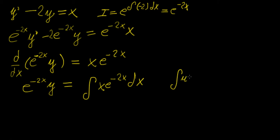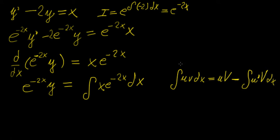Integration by parts: given a product of two functions u and v, you integrate one of them first — call its integral capital V — and the formula is u·V minus the integral of (u' · V) dx. This is the analogue of the product rule of differentiation but applied to integration, and we use it to integrate x · e^(-2x).